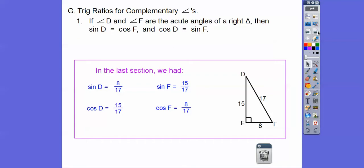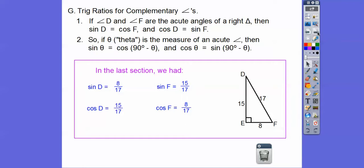So trig ratios for complementaries. If angle D and F are the acute angles of the right triangle, then the sine of this angle equals the cosine of this angle. And the sine of this angle equals the cosine of this angle. If theta is our angle, the sine of some angle theta is equal to the cosine of its complement. The complement is 90 minus theta. And similarly, the cosine of theta is equal to the sine of that complement right there.